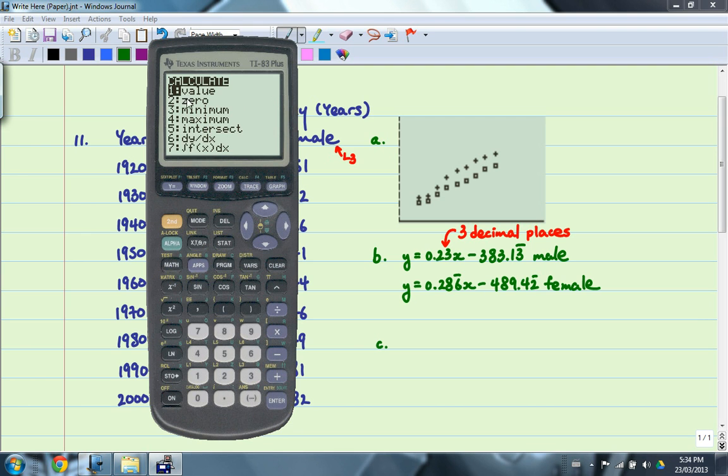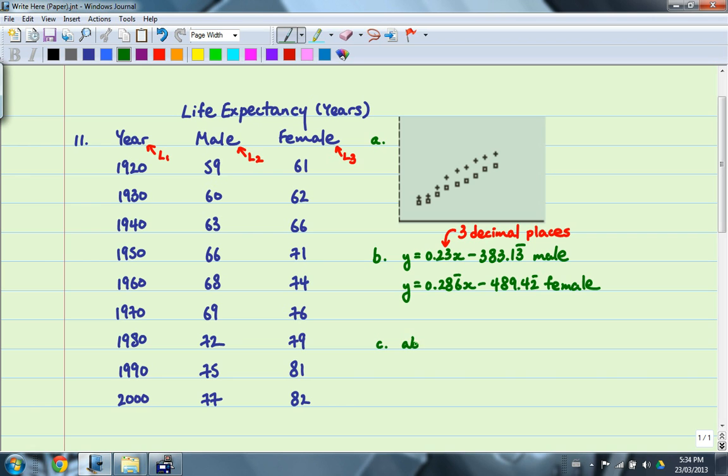So now I'm going to go second, calculate, value. I'm going to enter X equals 2012. And it will give us the life expectancy here, which is about 80 years. And that will be for male.